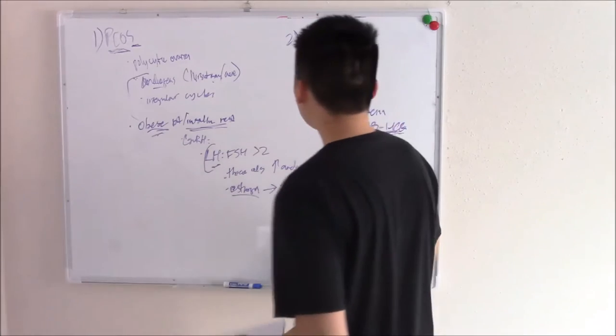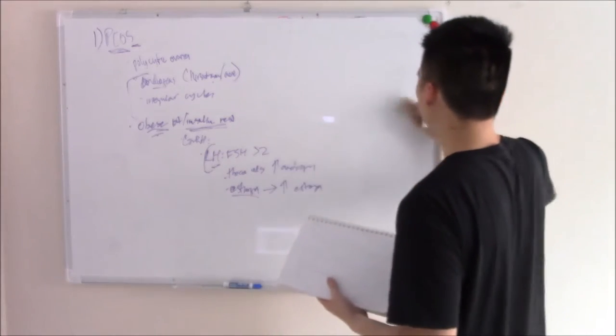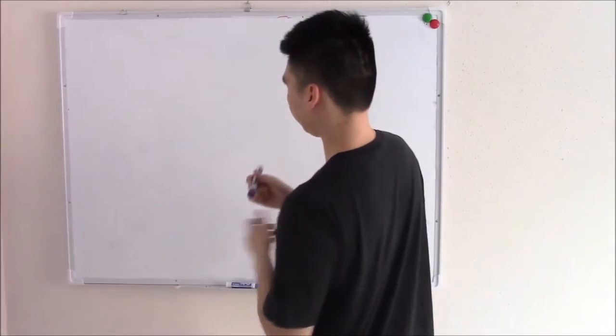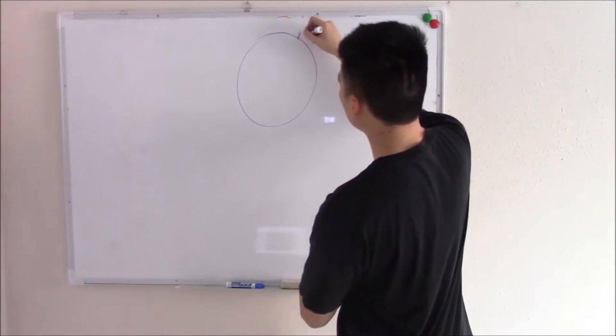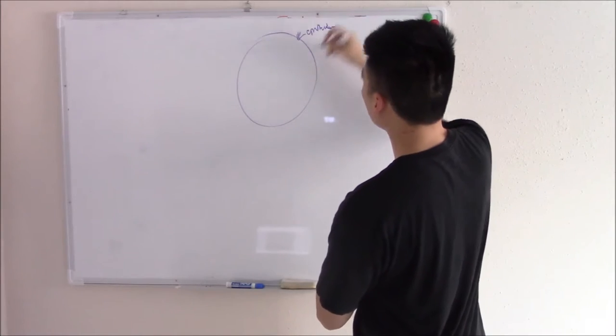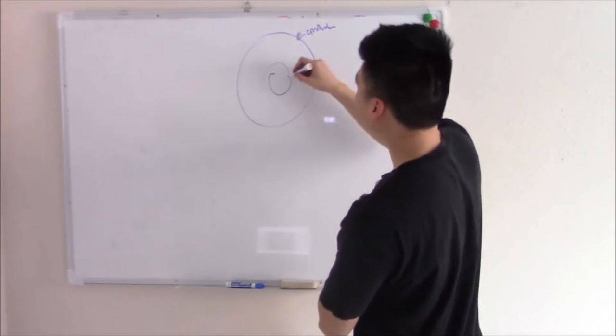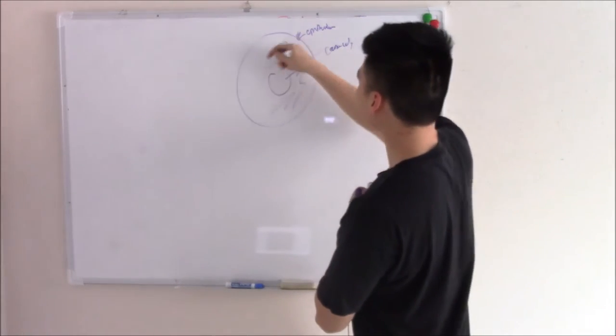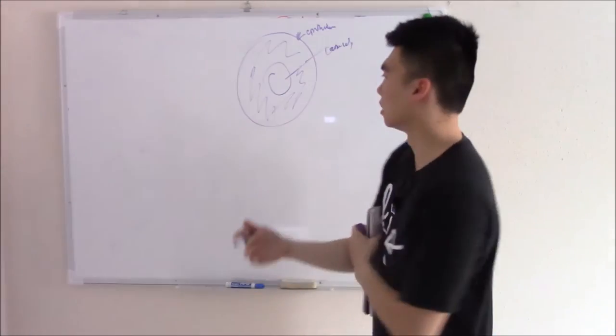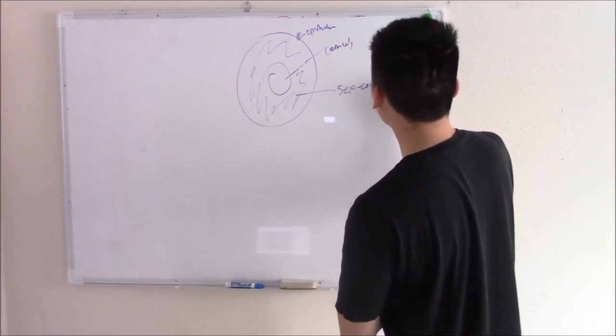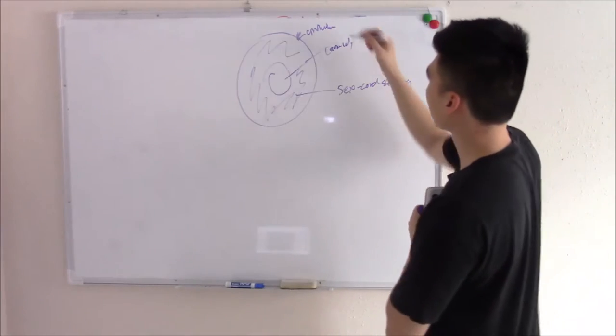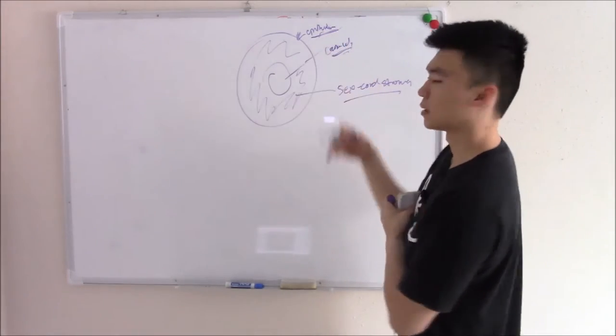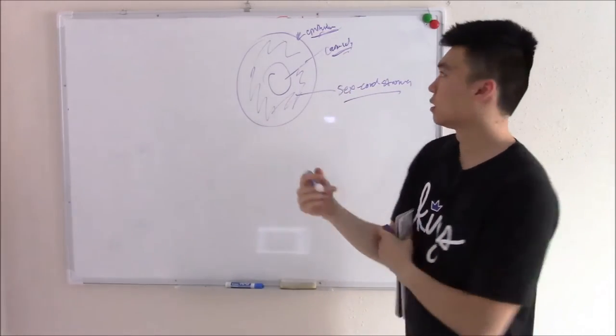Let's move on to tumors. Ovarian tumors are numerous, but we can look at it systematically by first looking at the anatomy of your ovary. You have your surface epithelium, your follicle with the germ cell, and in between you have support cells - connective tissue, stroma - we call that sex cord stroma. Anything that can go wrong, will go wrong. Each can mutate and become a tumor.